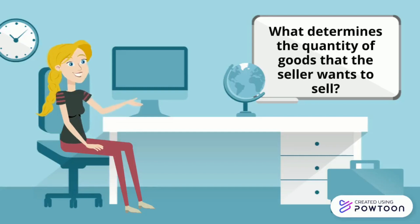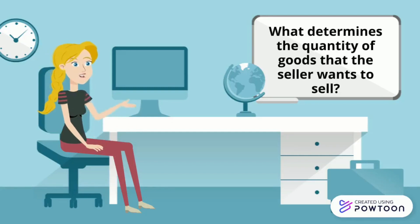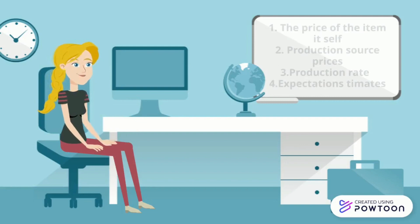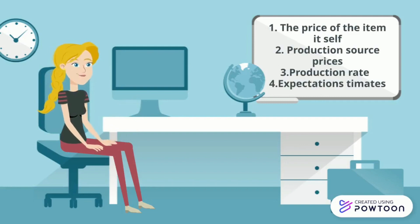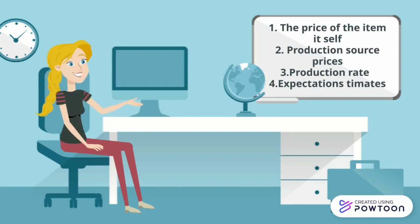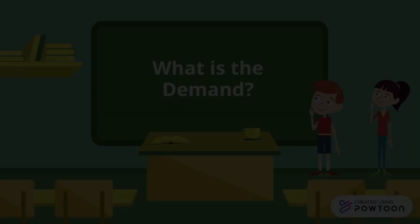What determines the quantity of goods that sellers want to sell? First, the price of the item itself. Second, the production input price. Third, product technology. And fourth, expectation of demand.